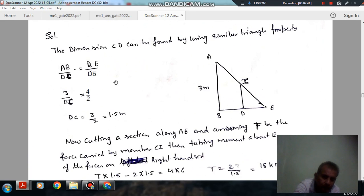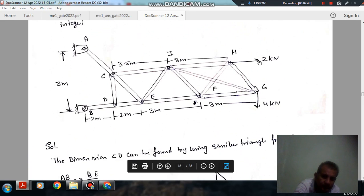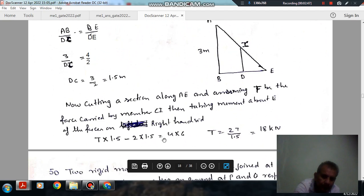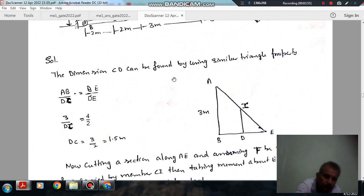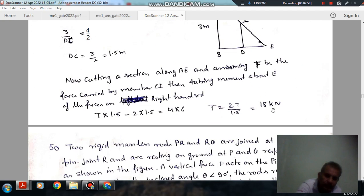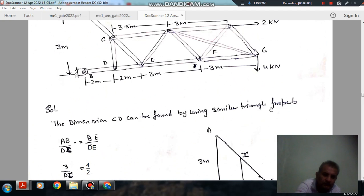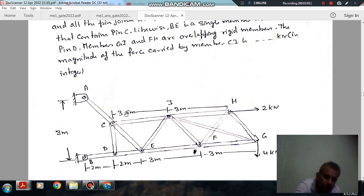For this, T into 1.5, and 2 is in this direction, 2 into minus 1.5, and should be equal to 4 into 6. So taking moment about this, T is 18 kilonewtons. The answer is 18 kilonewtons.